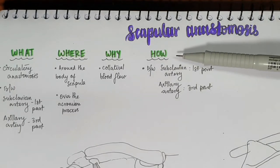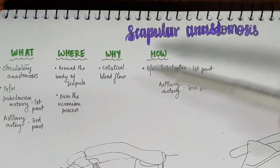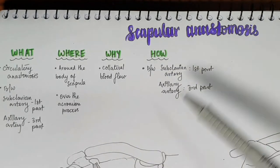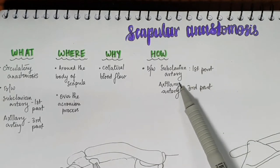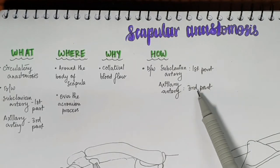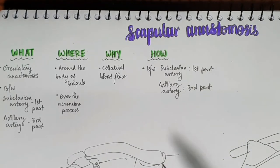Now, how is it formed? As mentioned before, it is formed between the first part of the subclavian artery and the third part of the axillary artery.